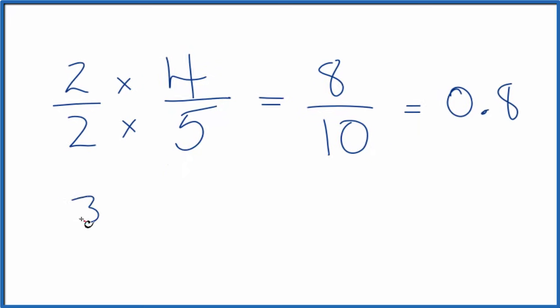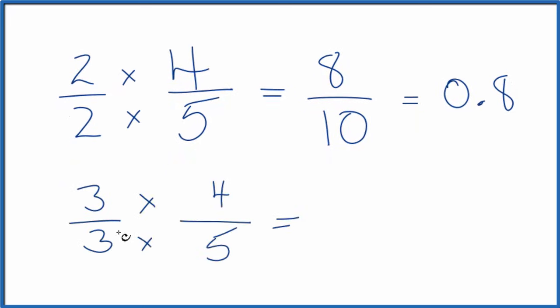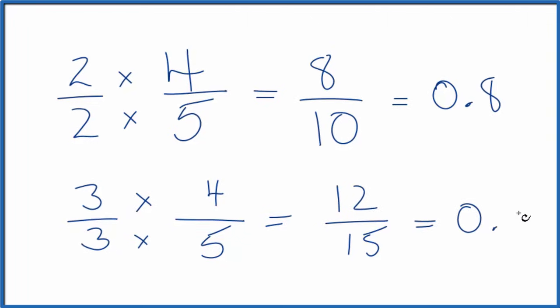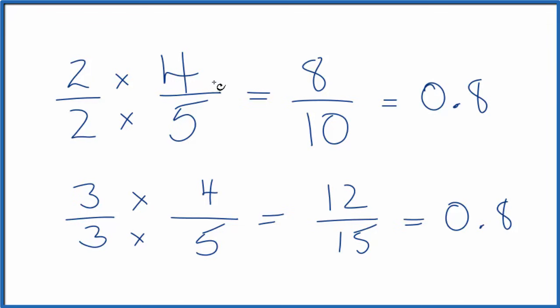Let's do another one. How about three divided by three? So again, three divided by three is one. We're not changing the value. Three times four, that's twelve. Three times five, that's fifteen. This again is an equivalent fraction. It has the same value as four-fifths.